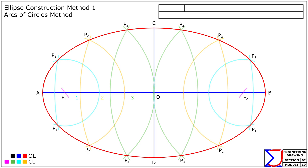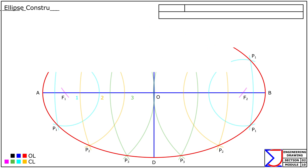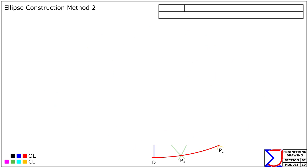This construction method is both practical and reliable, especially when working without advanced drawing instruments. Ellipse construction method two. Let's proceed with the concentric circles method to construct the ellipse having a major axis of 80 millimeters and a minor axis of 50 millimeters.